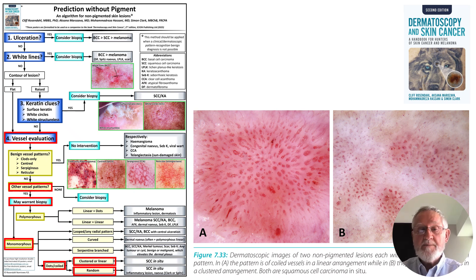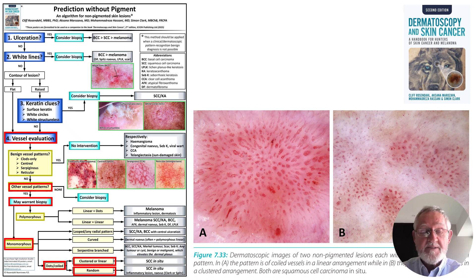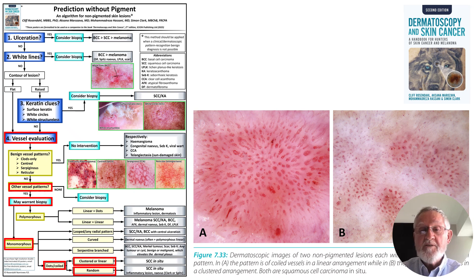Finally, we come to a monomorphous pattern of coiled or dot vessels. As you can see from the algorithm, this can point to SCC in situ but also to inflammatory lesions such as psoriasis and to naevi such as Spitz or Clark naevi. However, when coiled or dot vessels are lined up in a linear arrangement — as on the lesion on the left — or in a clustered arrangement — as on the lesion on the right — this points confidently to SCC in situ.